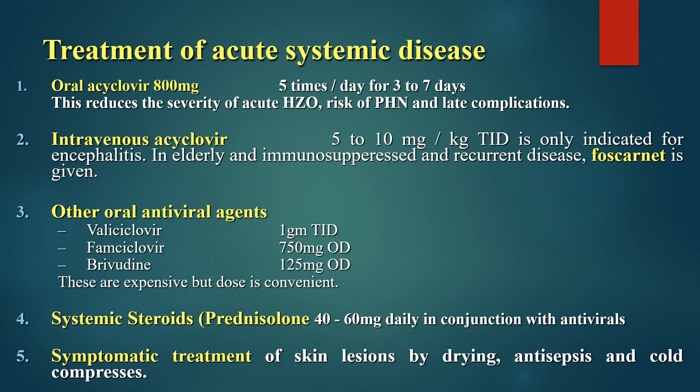Other oral antiviral agents include valacyclovir 1 gram three times a day, famciclovir 750 mg once a day, and brivudine 125 mg once a day — these are expensive but dosing is more convenient. Systemic steroids, prednisolone 40 to 60 mg daily in conjunction with antivirals, are also recommended. Symptomatic treatment of skin lesions includes drying, antisepsis, and cold compresses.